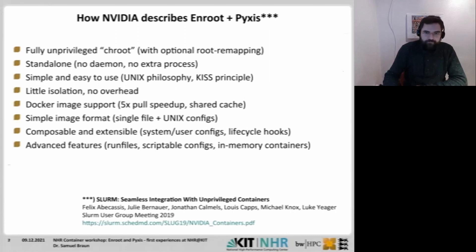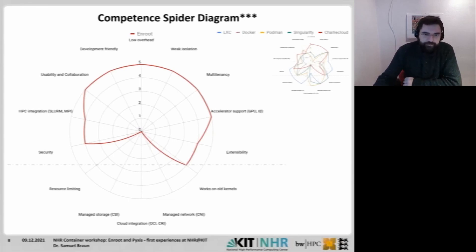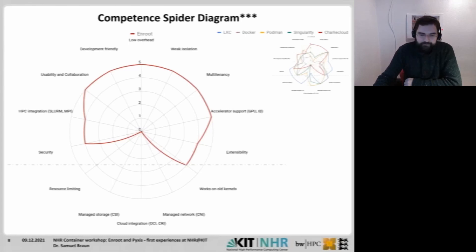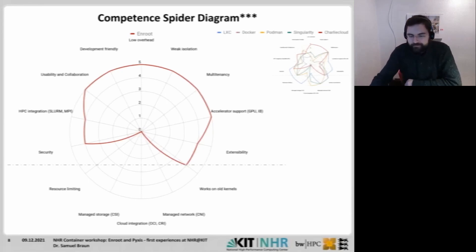That's how NVIDIA describes EnRoute. Interestingly, there's a competency diagram of EnRoute where they give it 100% usability, collaboration, development-friendliness, low overhead, and so on. For comparison, the diagram includes Elixi, Docker, Podman, Singularity, and Charlie Cloud. That was their motivation to start developing EnRoute. Also of interest is how they view Singularity — that's NVIDIA's point of view, which may be discussable, but it gives a first hint as to why they chose to write their own solution.